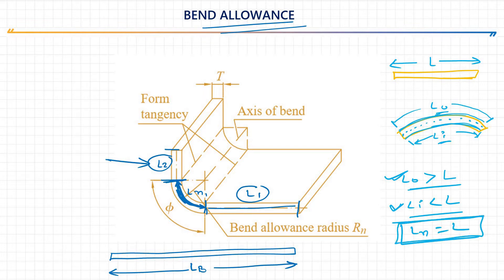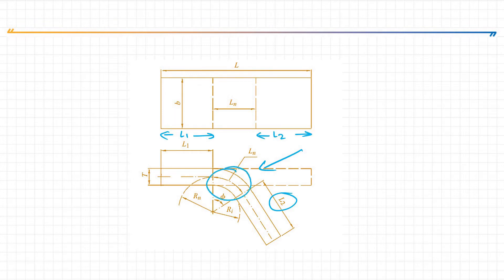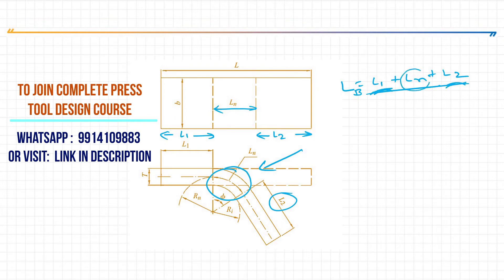That line where LN equals L is called the neutral line or neutral axis. Now let's see an example. For a bent component, we develop a blank length by calculating L1 (straight portion), L2 (straight portion), and LN (the bend arc at neutral axis). The total blank length L equals L1 plus LN plus L2.